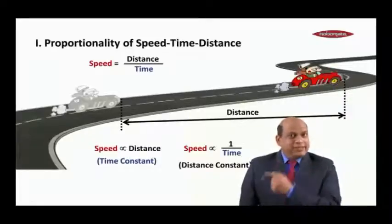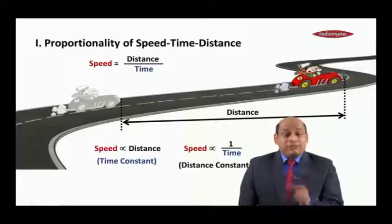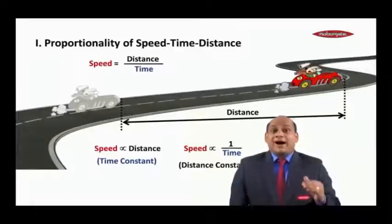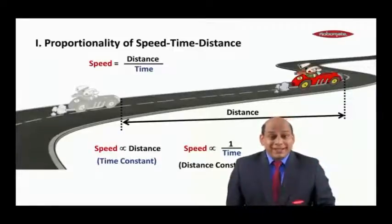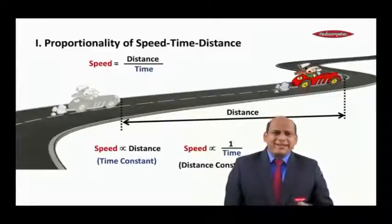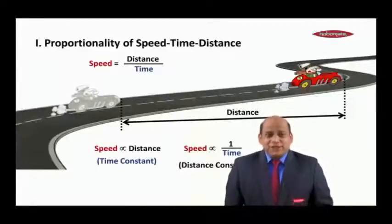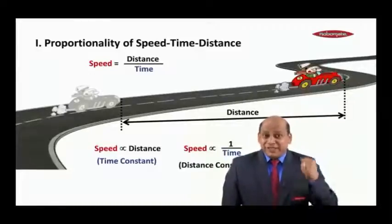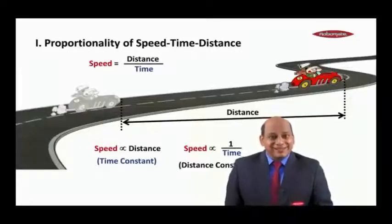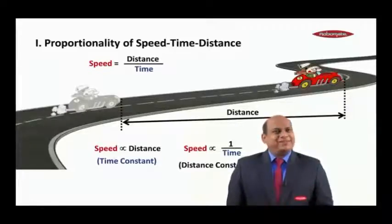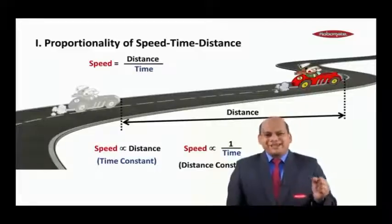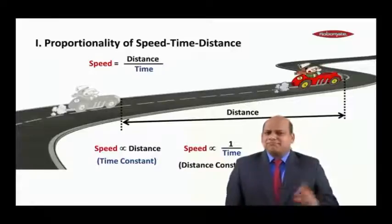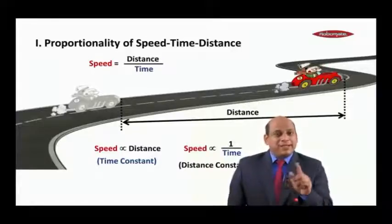Speed and time are inversely proportional, provided the distance is constant. What that means is for covering a particular distance, at a higher speed you are expected to take less time — just common sense. If you are in a hurry to travel the same distance, you jack up your speed so that you reach well in advance. On the other hand, if there are no time constraints and you are relaxed, at a slower speed covering the same distance will take much more time. So speed and time are inversely proportional.